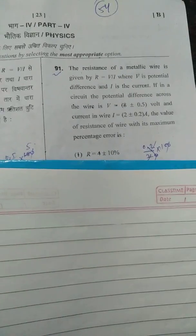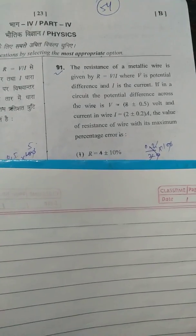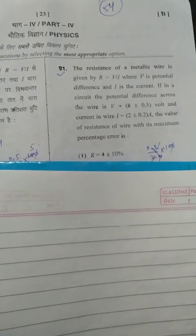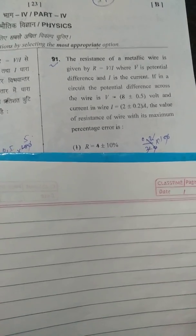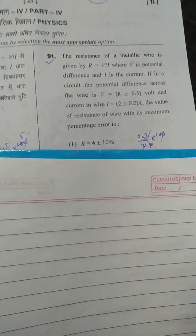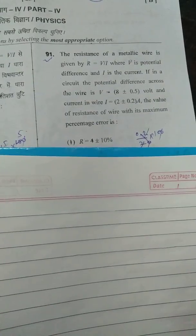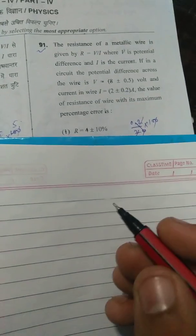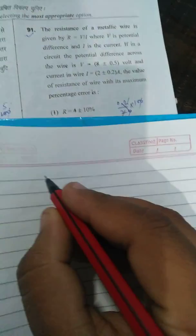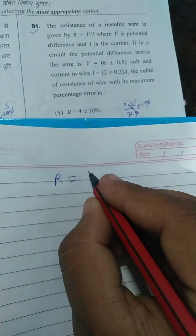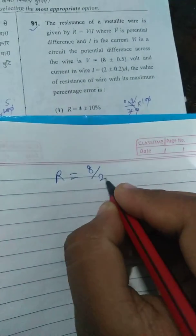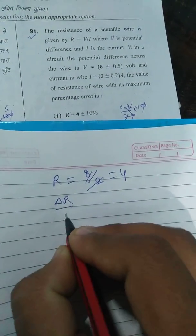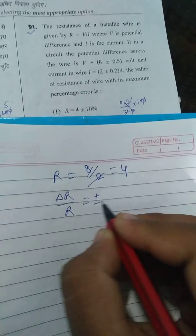Hello friends, solutions of STAT January 2011 PGT Physics question paper. Question 91: R is V by I, where V is the potential difference and I is the electric current, given by V is 8 plus or minus 0.5. We have to find R. The true value: V is 8, I is 2, so true value of R is 4.